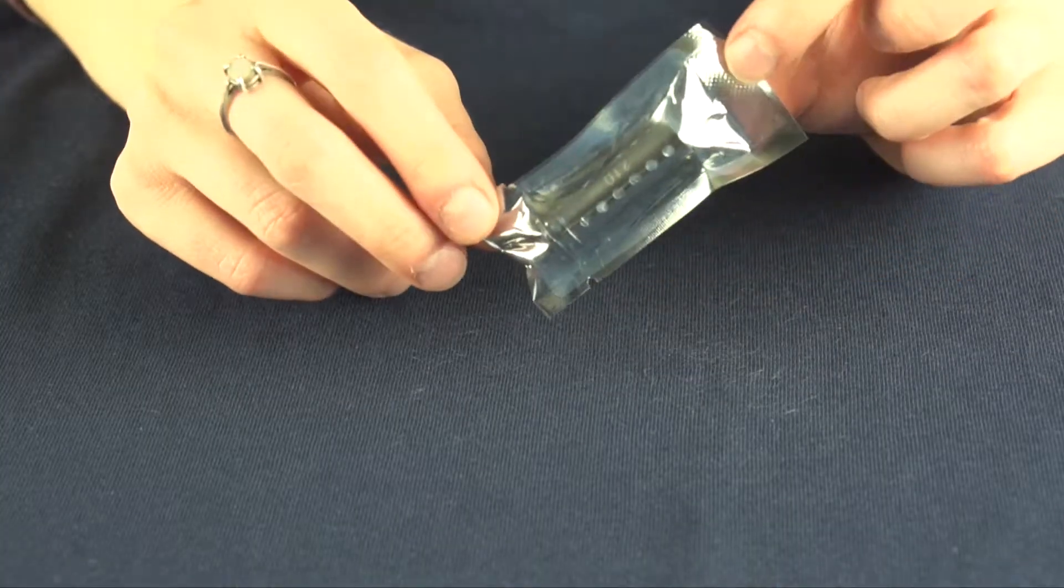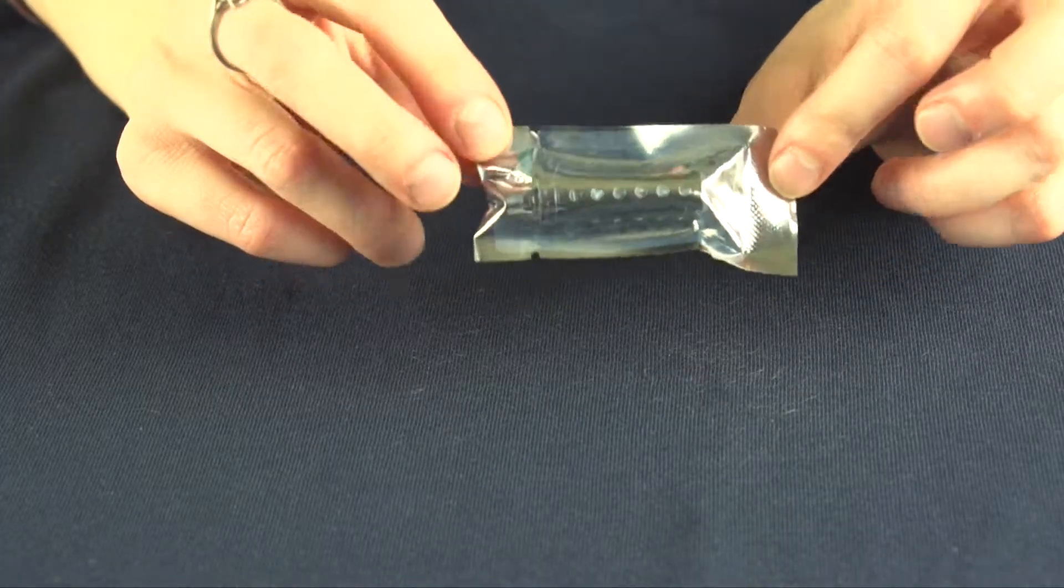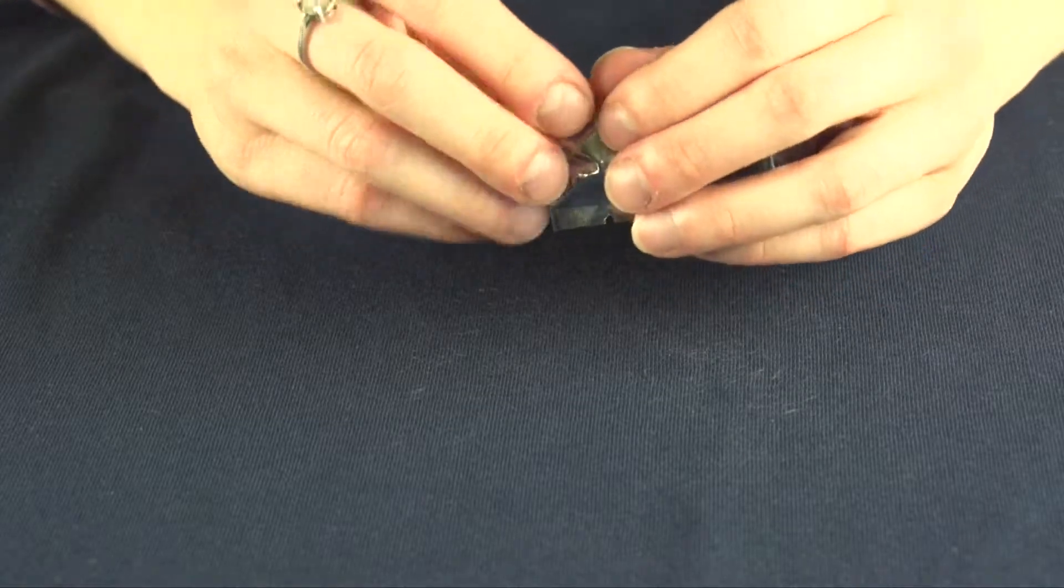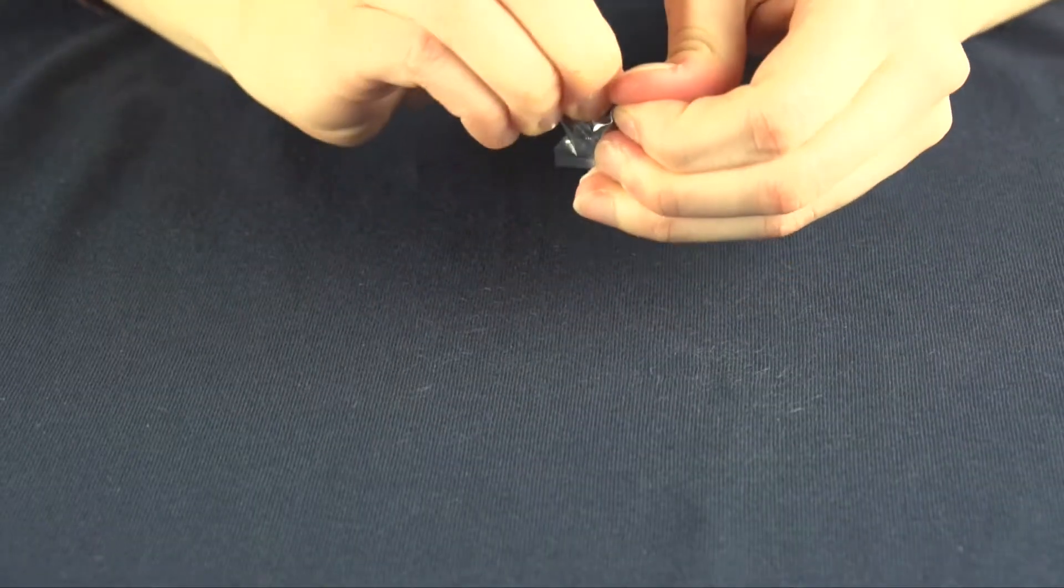The iClear 30S replacement coils are sold as a single unit on our site mountbakervapor.com and are available in 2.1 ohms.